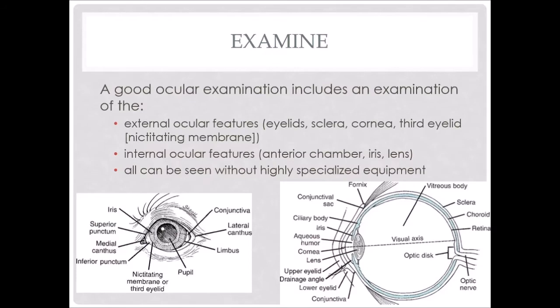First of all, we need to be able to examine the eyes or the ears, including any external ocular features such as the eyelids, the sclera, the cornea, and the third eyelid, which is the nictitating membrane. We need to include the internal ocular features, which involves looking at the anterior chamber, the iris, and the lens. Often your doctor will do this with an ophthalmoscope, but you can also get in the habit of looking at it and looking for differences and changes.